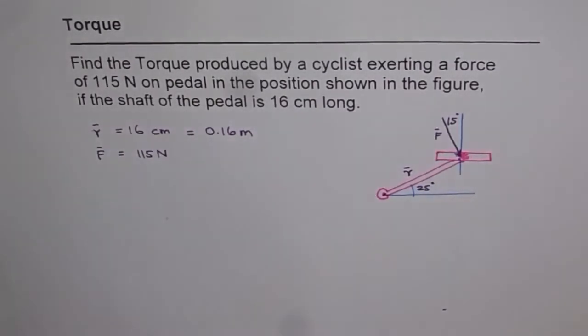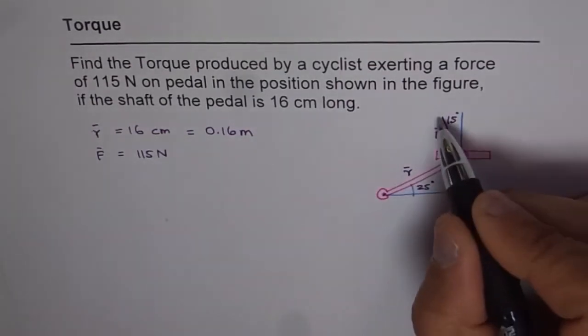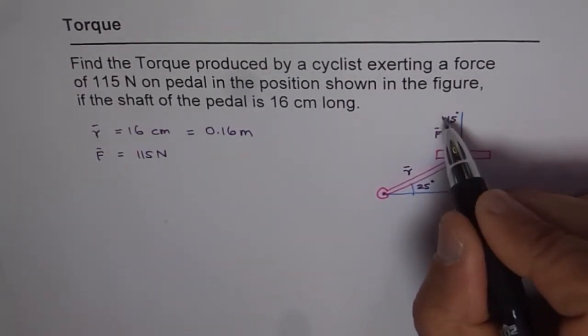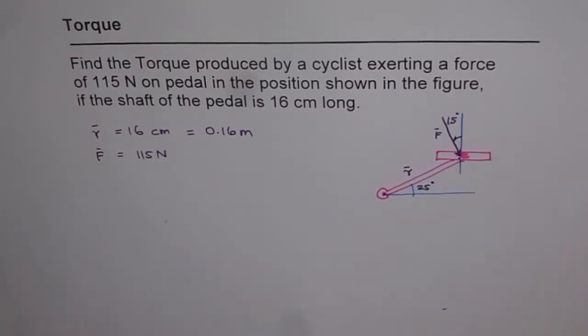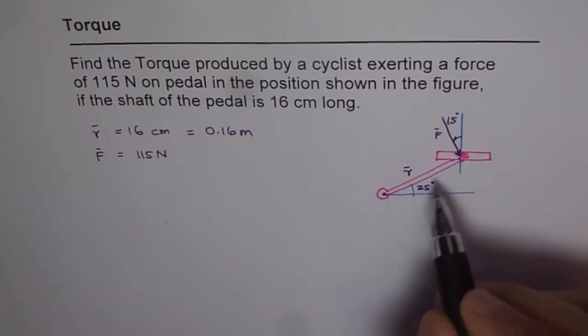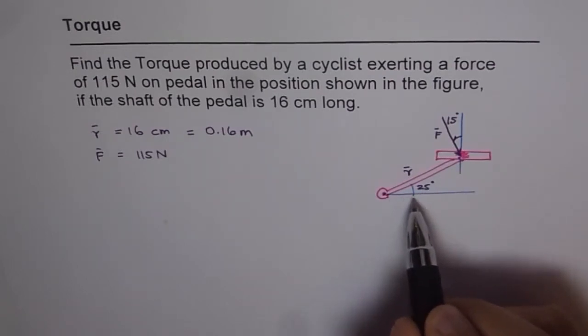So that is the magnitude of force given to you. And the direction is also given which seems 15 degrees from north. So from north it is 15 degrees. Now this pedal is at 25 degrees with the horizontal.